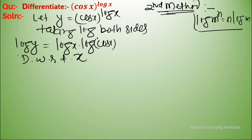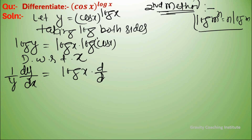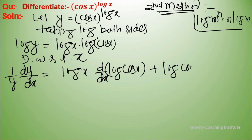Taking log of both sides gives 1 upon y times dy upon dx, and applying the product rule: log x into differentiation of log cos x, plus log cos x into differentiation of log x.